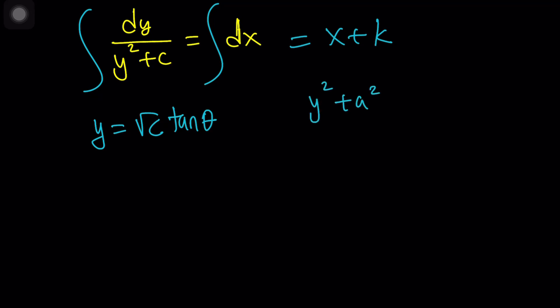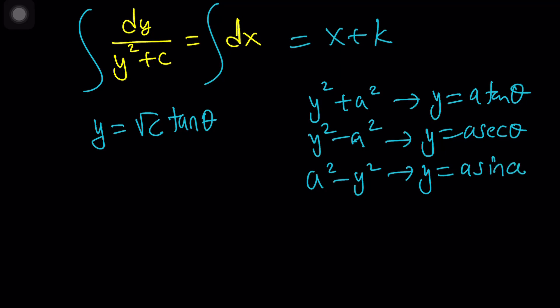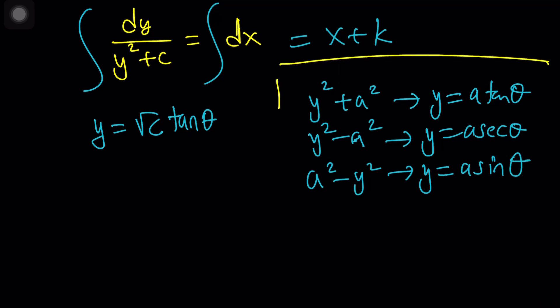So here's the idea. Whenever you see y squared plus a squared, always replace y with a tangent theta. If you see y squared minus a squared, then you should replace y with a times secant theta. And if you see a squared minus y squared, then you should replace y with a times sine theta. You get the idea? Those are trigonometric substitutions, and they're very very common. So you should know them by heart. Memorize.